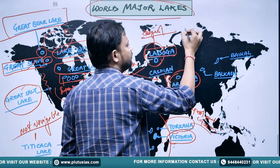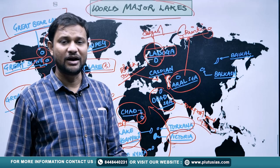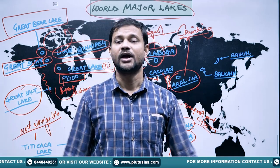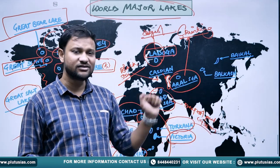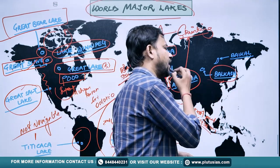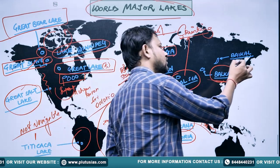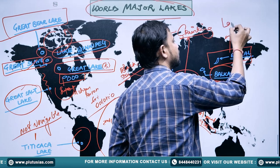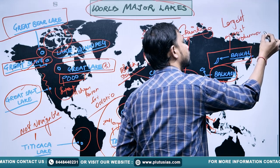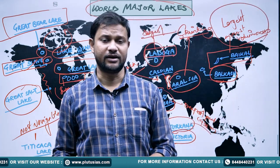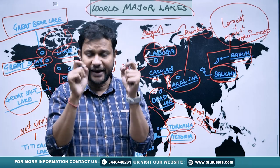The Aral Sea is a shrinking lake — a question that has been asked in various competitive examinations including UPSC. Due to irrigation projects built by the USSR and Russian government, the Aral Sea is getting drier because of water diversion initiatives. Then, in the Siberian-Mongolian border region, you will find Lake Balkash. And the world-famous, largest and most voluminous lake is Lake Baikal.